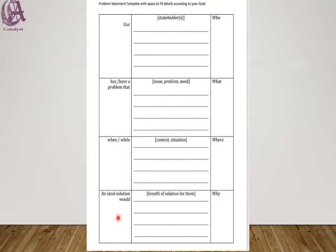Once you complete all these blocks, you can join them and form this particular template. As you can see in this template, there are certain texts already written. You have to write those texts as they are, and in the blank areas you write down your answers. When you see it in one single sheet, you can easily validate the solution you are giving to the problem. Going piece by piece, you can make the 4W canvas very easily.